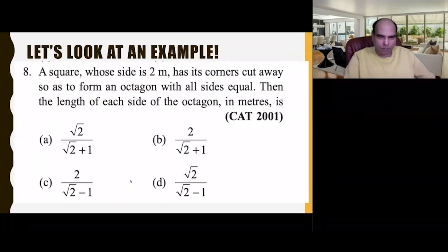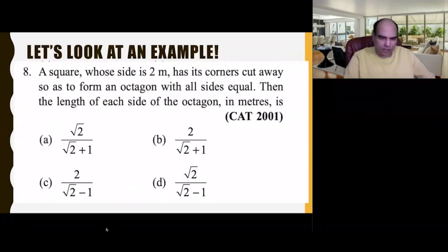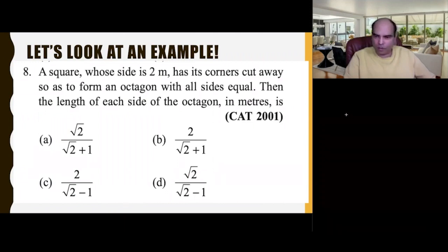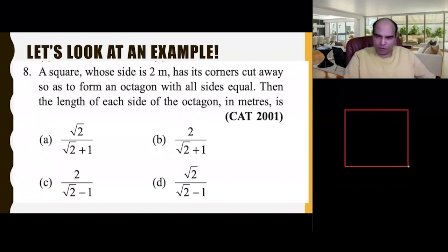It's a geometry question. I want you to pause the video and try to solve this, then I'll solve it for you. If I'm trying to solve this conventionally, this is the conventional solution. The question says there's a square which has a side of two meters and it has corners cut away.